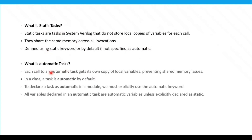What is an automatic task? Each call to an automatic task gets its own copy of local variables, preventing the shared memory issue. Which means when you are calling the task, it will create a separate memory for each call. In a class, a task is automatic by default. To declare a task as automatic inside a module, you must explicitly use the automatic keyword. All variables declared inside an automatic task are automatic variables, unless explicitly declared as static.